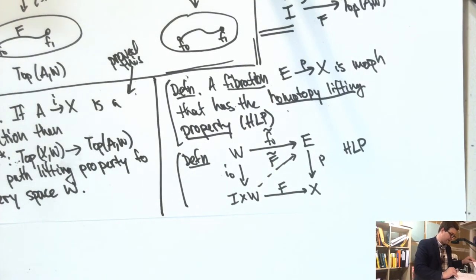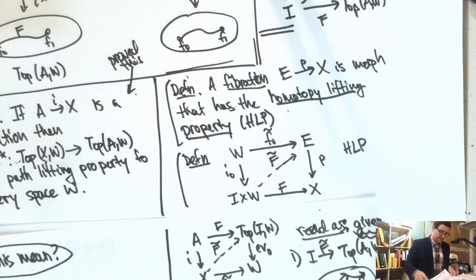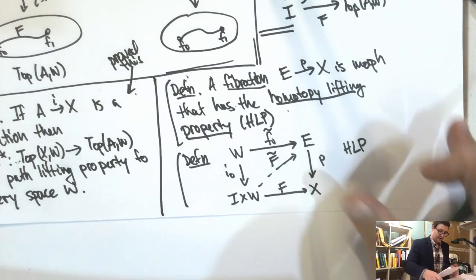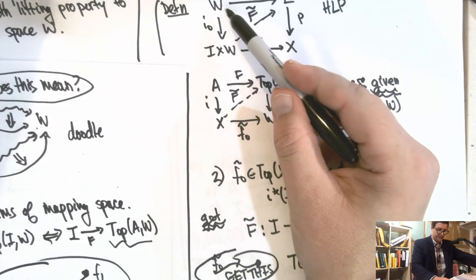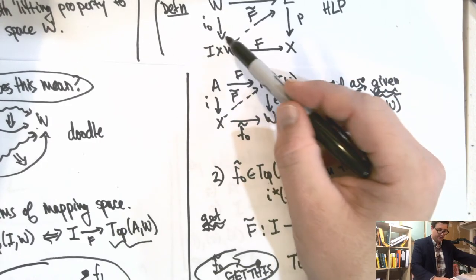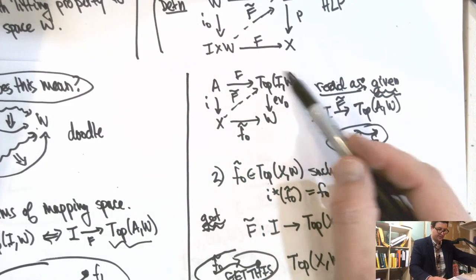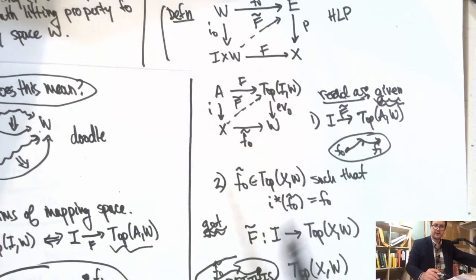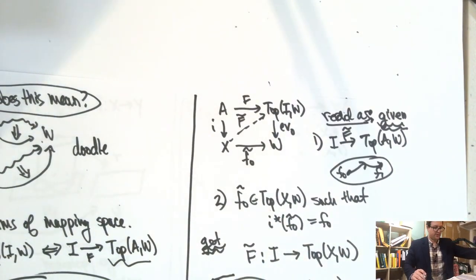The homotopy extension property is just the homotopy lifting property applied in the path space — that's how they are dual. Comparing the two diagrams: in the HEP version you have I crossed with spaces down below, and in the HLP version you use the adjoint formulation. They are dual to each other.